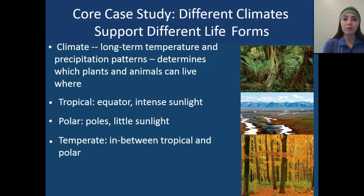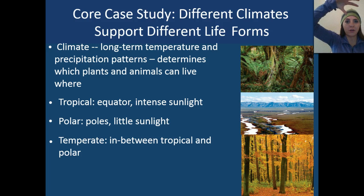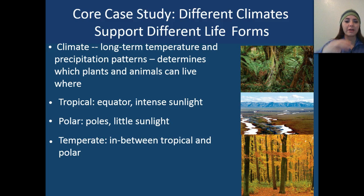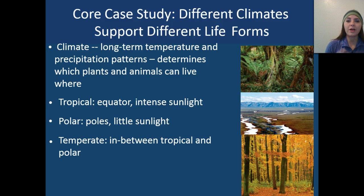We have our polar regions, which include the North Pole and the South Pole, and those receive very little sunlight. And then we have our temperate regions, which are in between our tropical and polar regions.